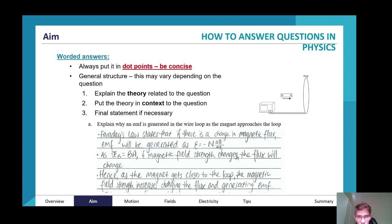Now you make the final statement: hence, as the magnet gets closer to the loop, the magnetic field strength increases, changing the flux and generating an electromagnetic force.